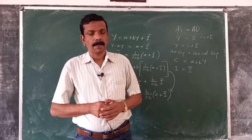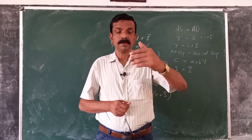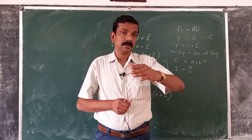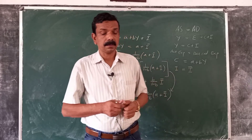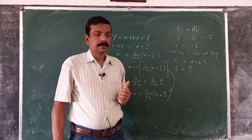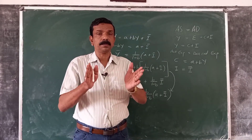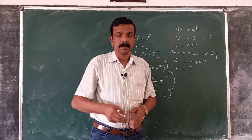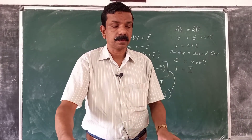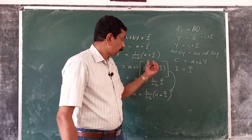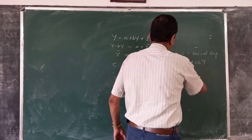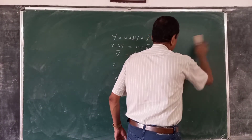In words, given the demand for investment I, which is exogenously determined by the expectations of entrepreneurs, if Y is equal to Y bar, then this output and the corresponding income is the equilibrium level of income and output. Let us now depict this graphically.